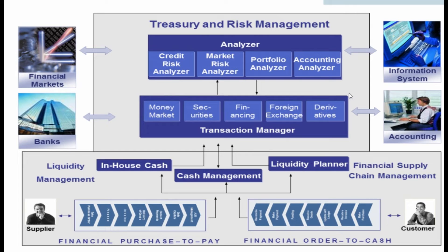In the area of SAP Treasury and Risk Management, there are enterprise business functions that can only be used after activating the relevant business functions in the customizing activity 'Activate Business Functions' using transaction code SFW5. To use the functions of individual components of SAP Treasury and Risk Management, we need to make the required settings in the Implementation Guide — the IMG — for treasury and risk management. Settings for business partner are made in customizing under Treasury and Risk Management, basic functions, and SAP Business Partner for Financial Services.